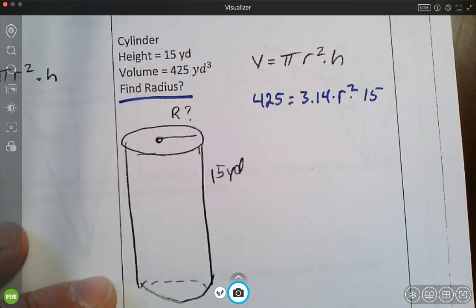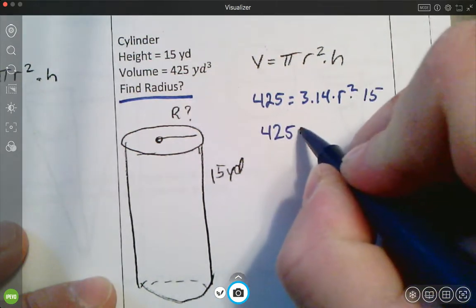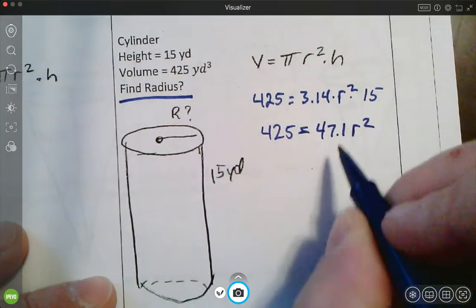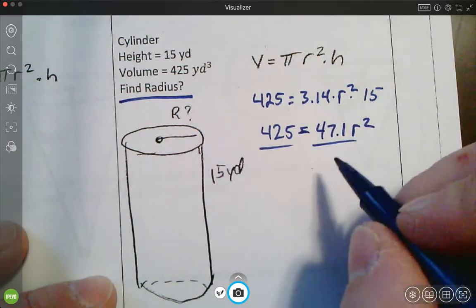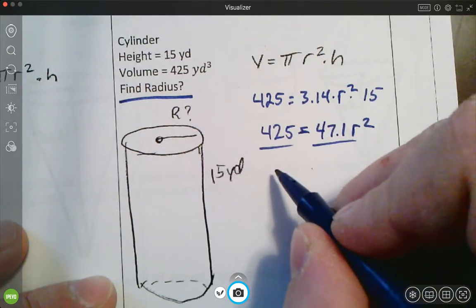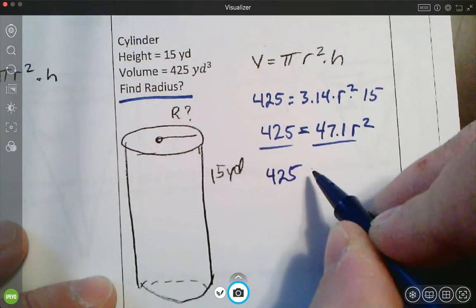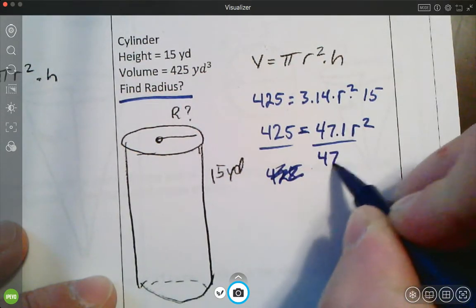So I can do 3.14 times 15 to get 425 equals 47.1. Then the radius squared, divide each side by the 47.1. So 425 divided by 47.1 is, oh, cool. It's like 9, really. So you end up getting 425. Sorry, let me write that out a little bit better.